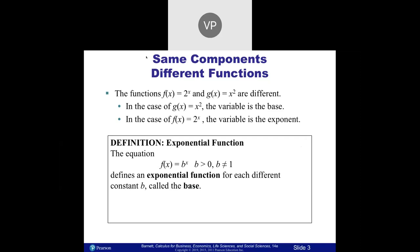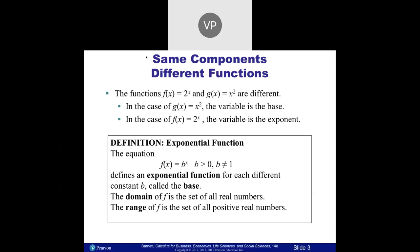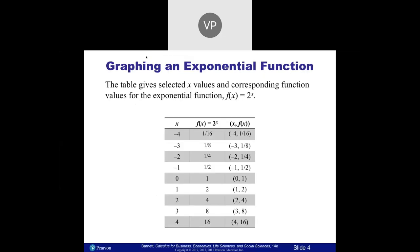Some key properties: the base needs to be a positive number, and it can't be equal to one, because if the base is one, it doesn't matter what the power is — you're always going to have a one. The domain is all real numbers. There's no square root, no fraction, so we get all real numbers. The range is going to be all positives, because we only get positive numbers from exponential functions.